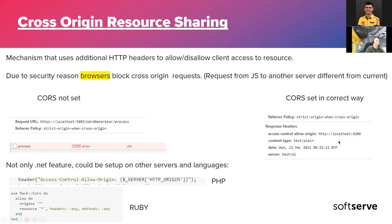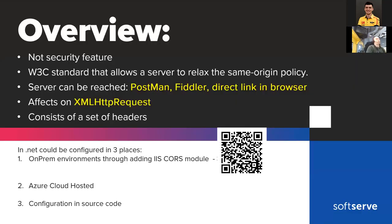Of course, CORS is not only a .NET feature — it can be configured on all server-side languages and even on servers like Nginx, and reverse proxy instruments can help with that as well. If we speak more globally, not just about headers, it's not a security feature per se. CORS can protect you from some browser-to-server requests, but it wouldn't protect you from requests made via Postman, Fiddler, or direct browser usage.